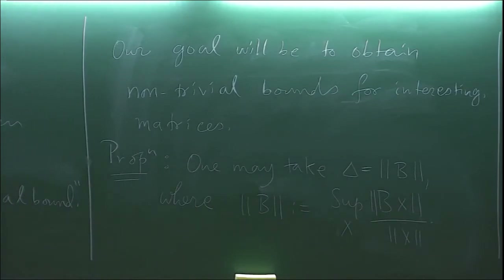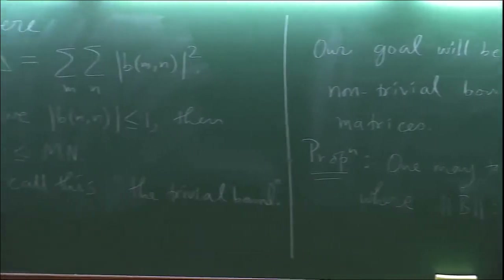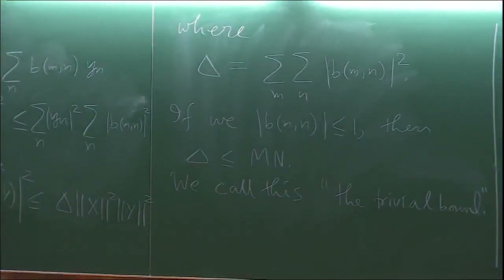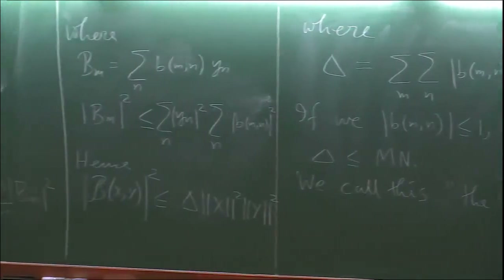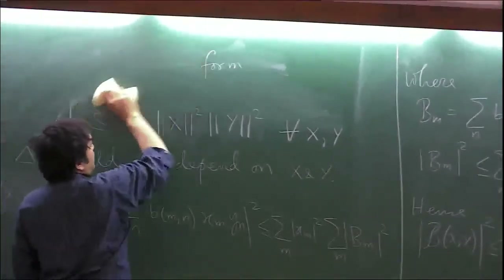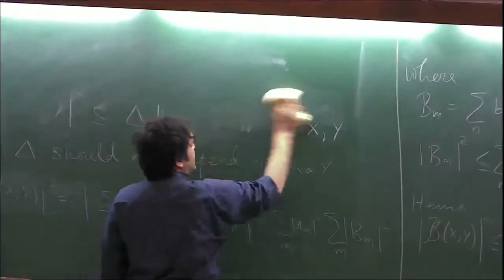We saw that we can take δ to be M times N, which is not a very good bound — it's too large. We have an abstract bound which is not useful. We want to make δ smaller. The question is: how small can we get? What is the best we can expect? We will obtain some lower bound on δ — that we cannot expect δ to be too small.